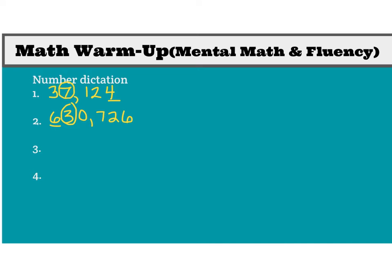Let's try our next one: 700,056. I'll say that one more time: 700,056. Circle the thousands digit. Underline the hundreds digit.